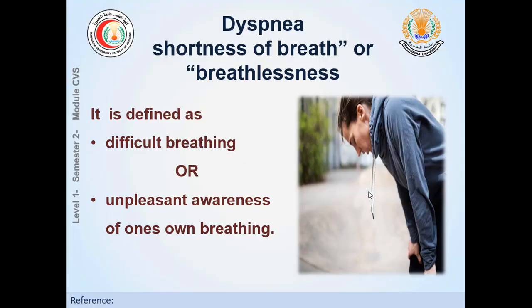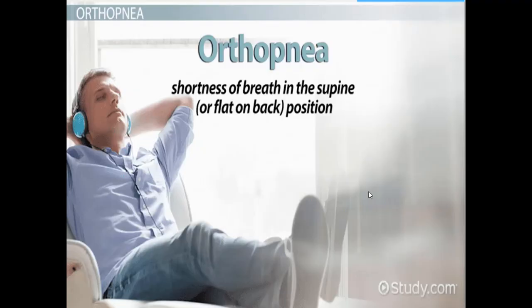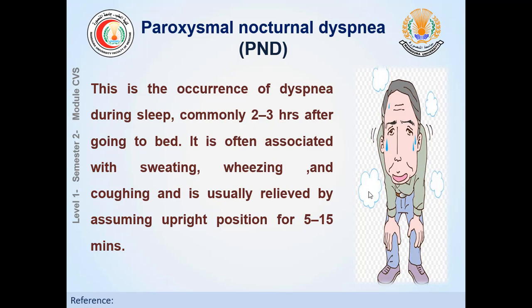Orthopnea is a type of dyspnea that occurs when lying down and is relieved by sitting up. Paroxysmal nocturnal dyspnea (PND) occurs after sleeping for about two to three hours and is usually relieved by taking the upright position. PND is mostly due to left-sided heart failure. You have to differentiate paroxysmal nocturnal dyspnea from bronchial asthma — they are not the same; PND is a cardiac cause.